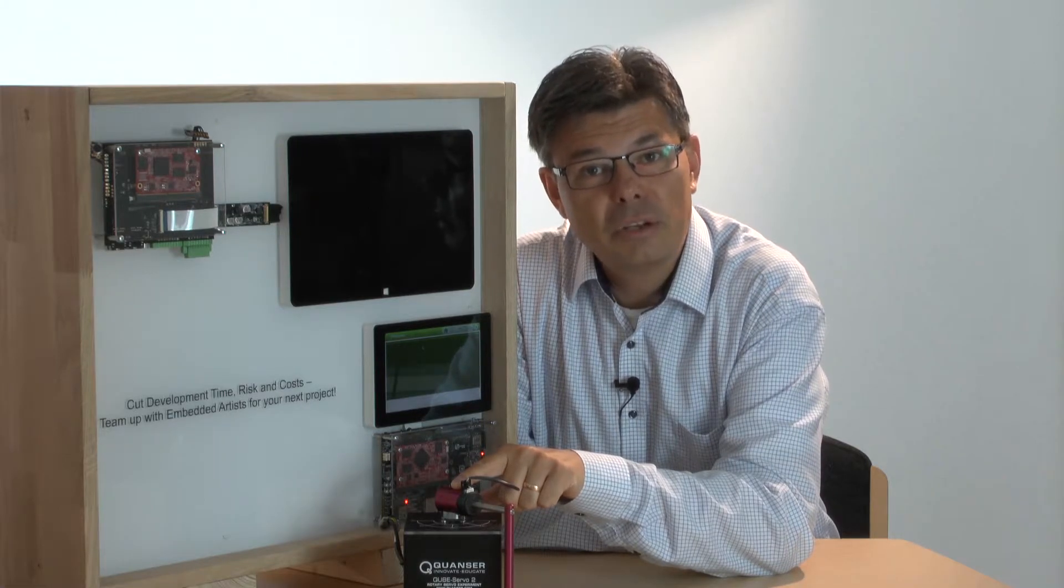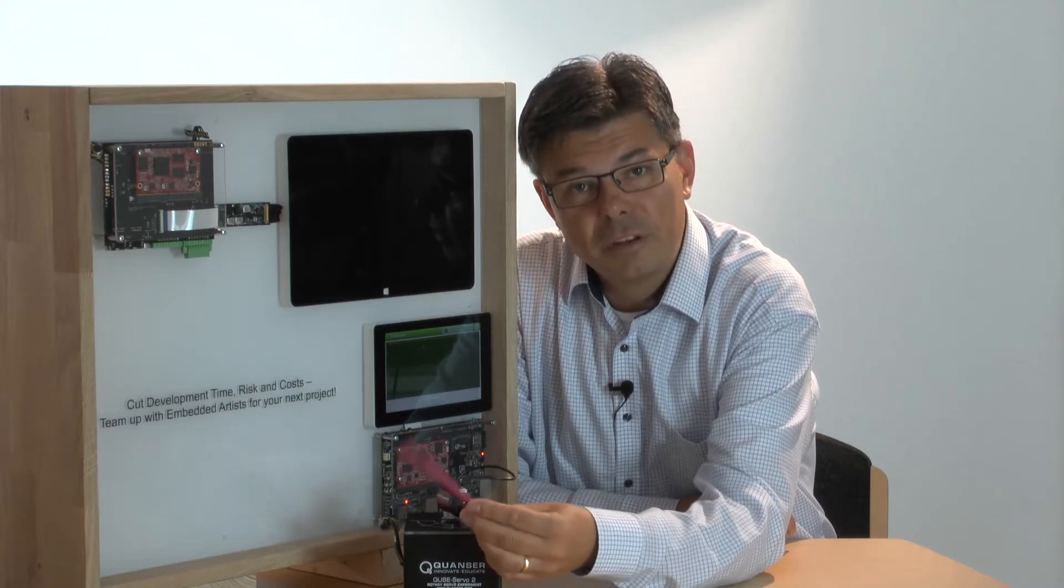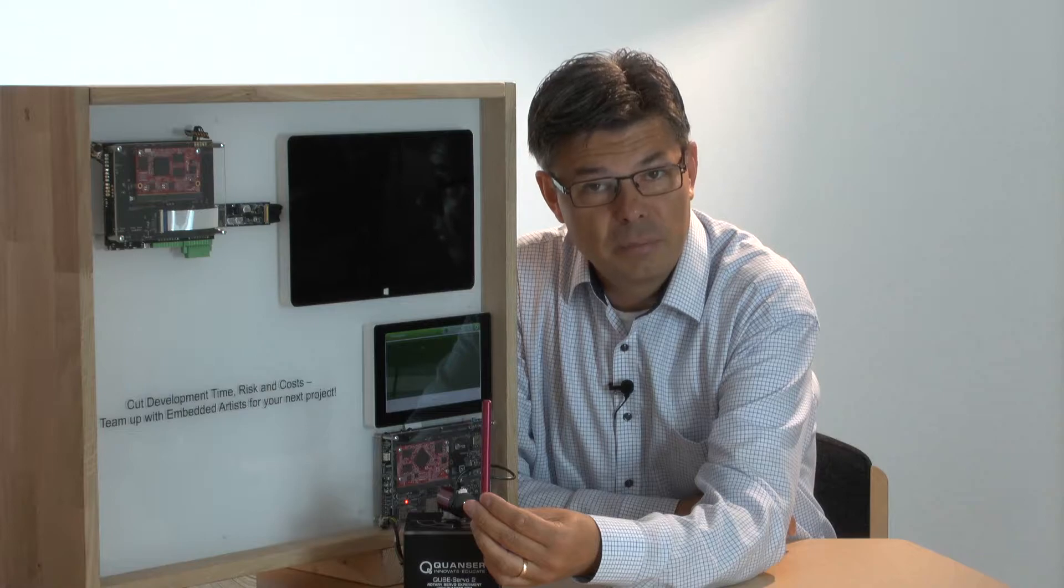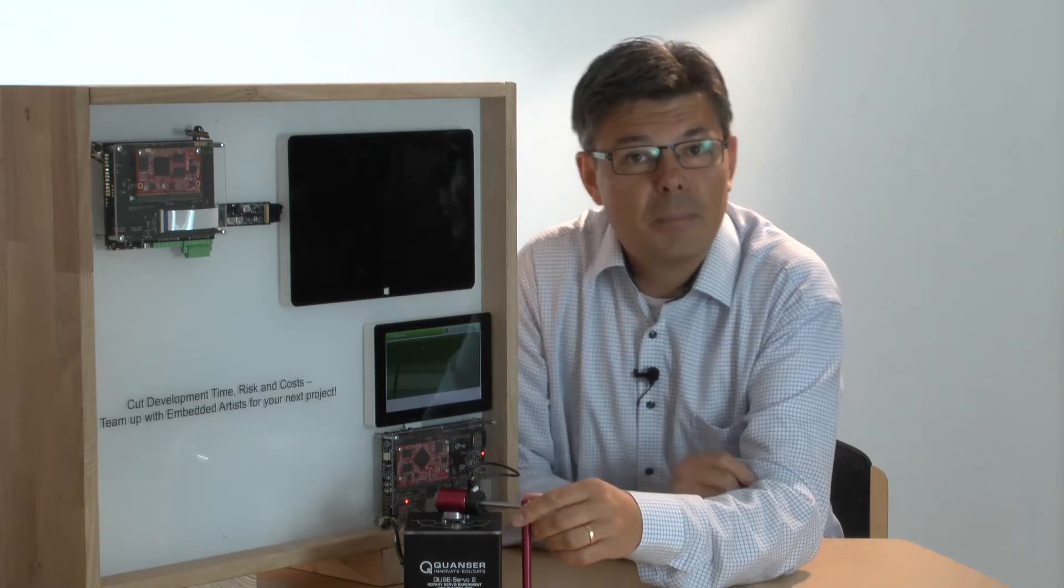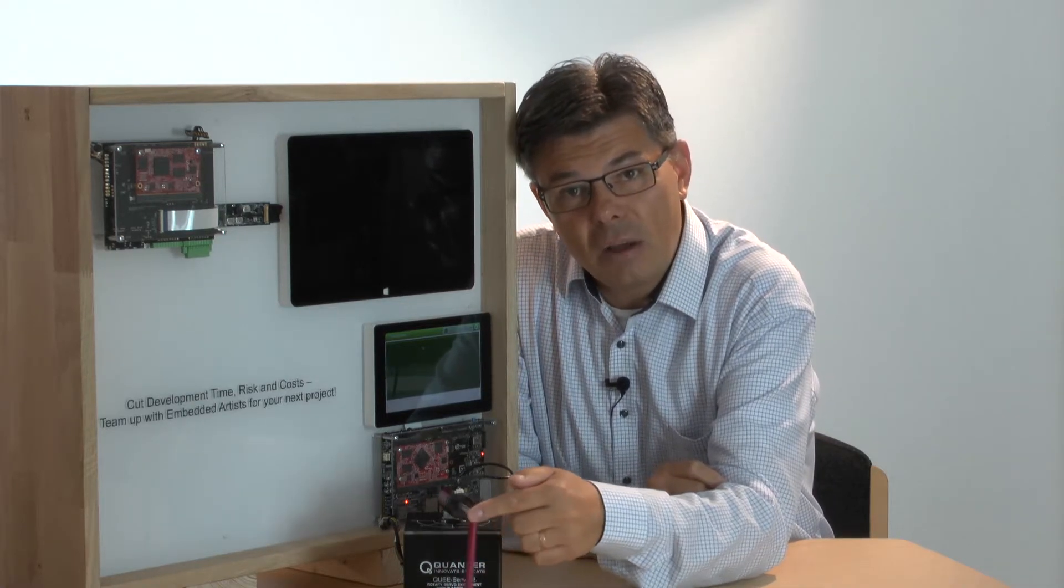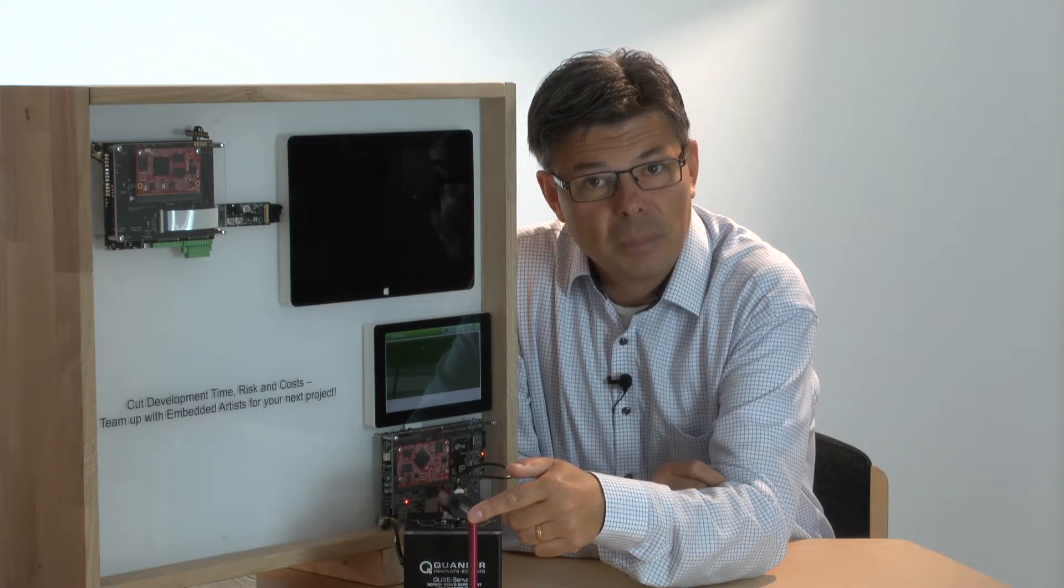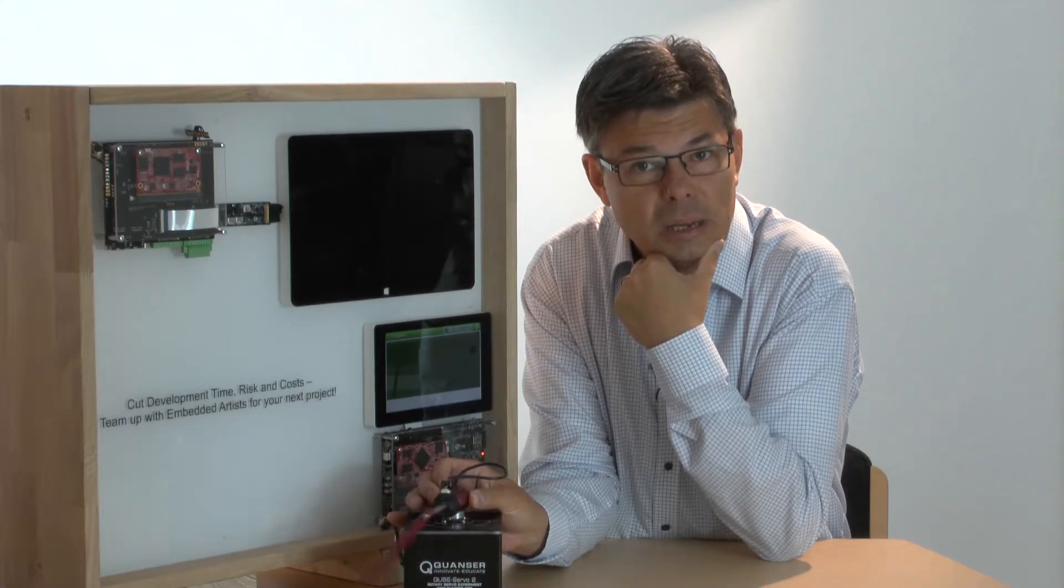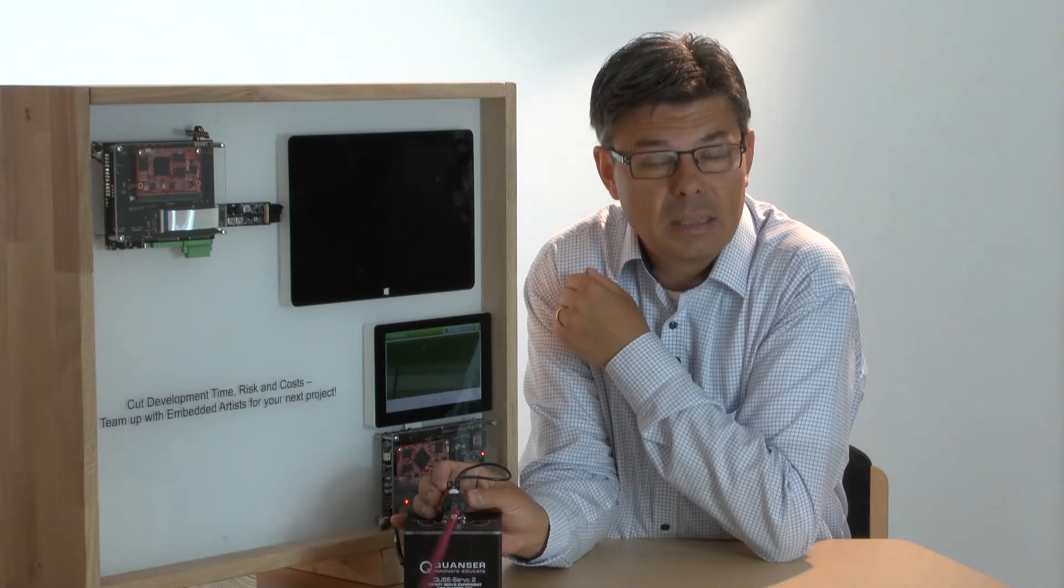We have implemented a dual-mode regulator. If the pendulum is plus-minus 15 degrees from the upright position, a balancing control loop regulates the position. The green light here shows that the balancing loop is active. If the pendulum is outside of the plus-minus 15 degrees, another control loop is active. It tries to increase the kinetic energy, like this, by swinging back and forth. The blue light here shows that the swing-up control is active.